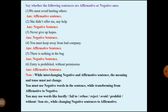Let's look at a few sentences. First: 'We must avoid hurting others' — that is an affirmative sentence. Second: 'He didn't offer me any help' — 'didn't' means negative, so it is a negative sentence. Third: 'Never give up hopes' — again a negative sentence.